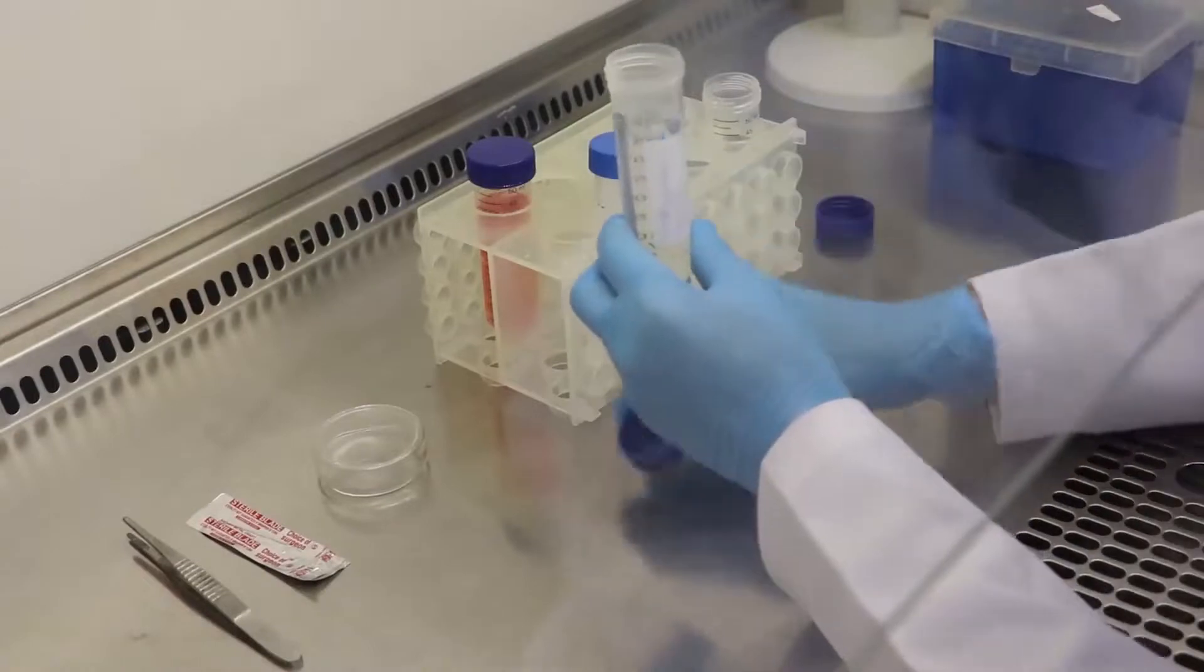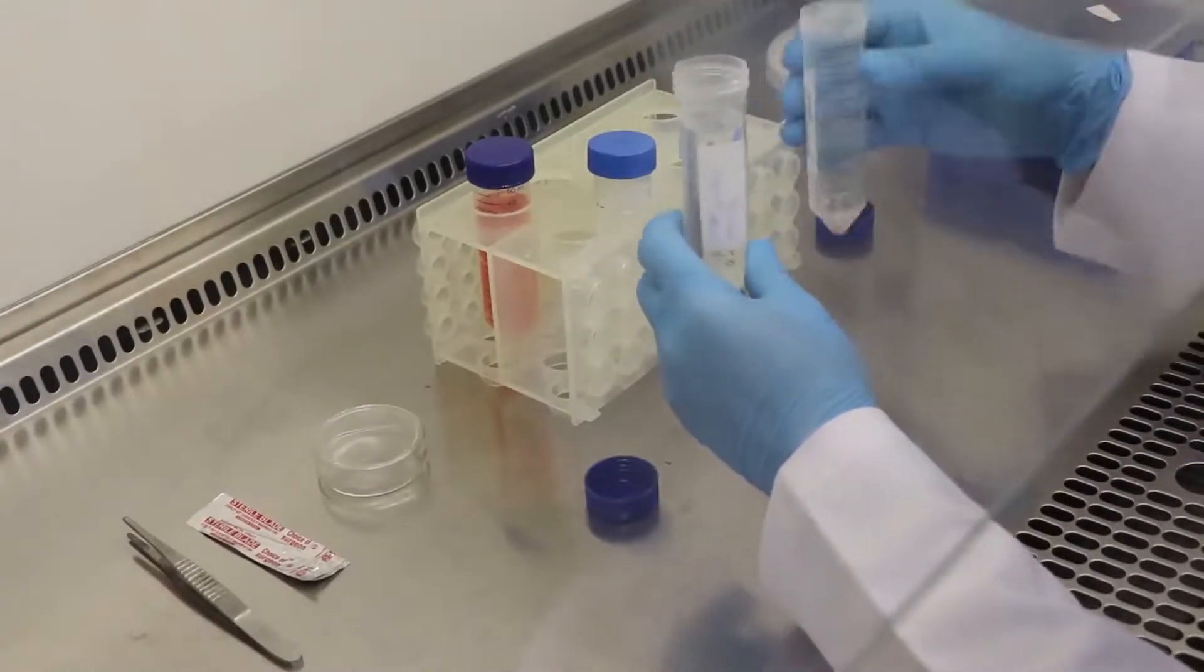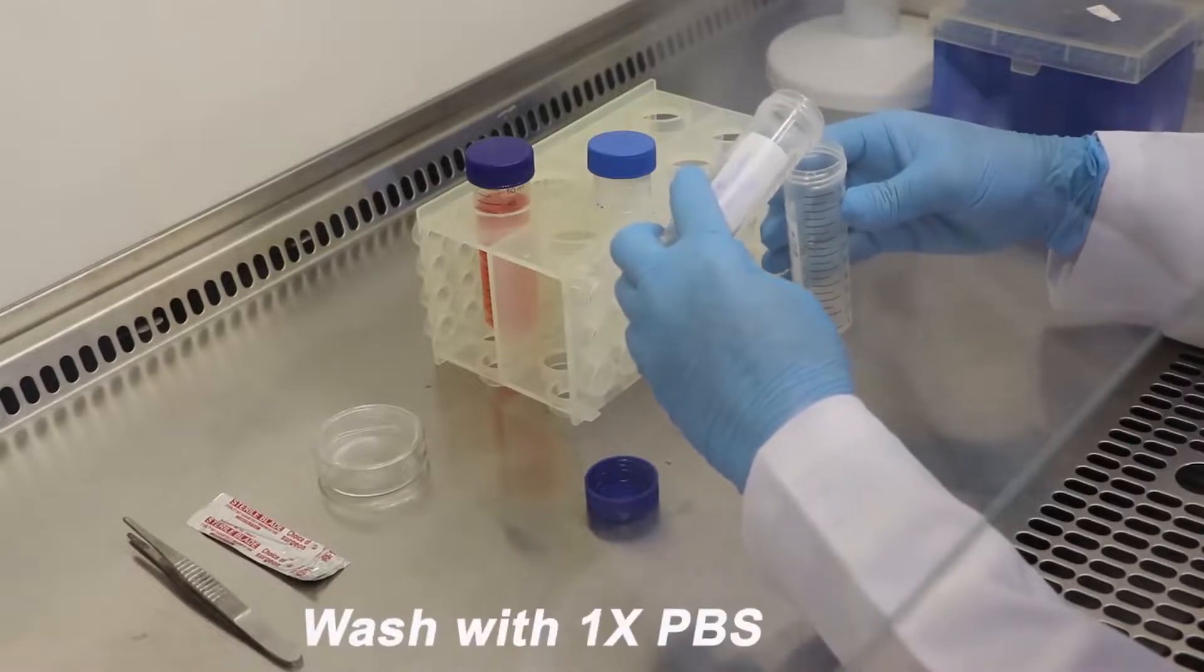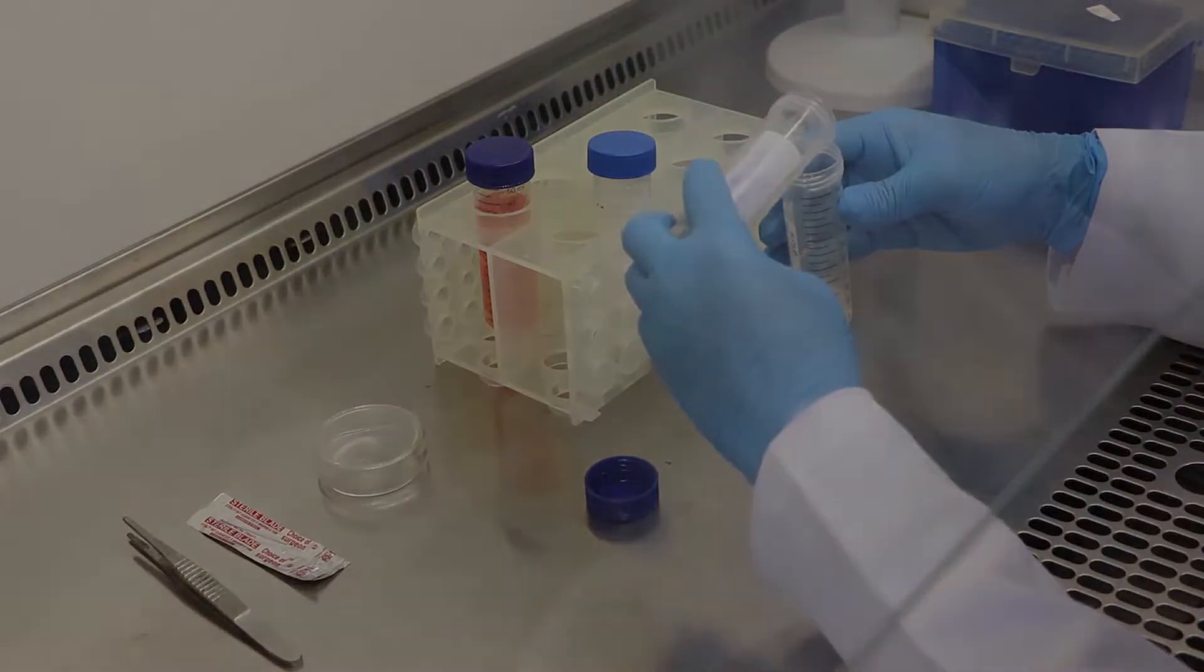Discard ACSF carefully and wash tissue once with 1x PBS warmed to 37°C. Ensure all blood is washed away with repeated washes as needed. Incubate the tissue in warm ACSF.